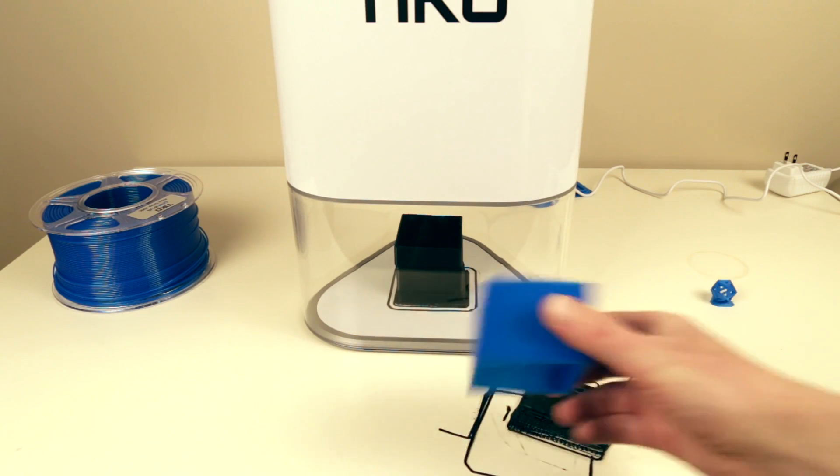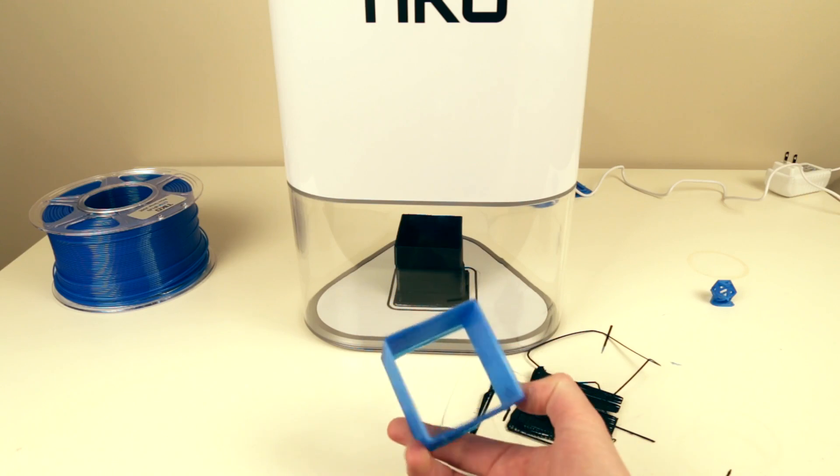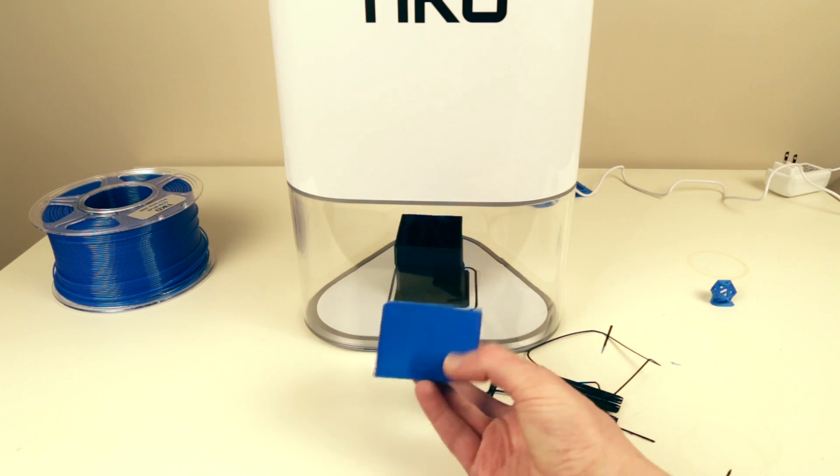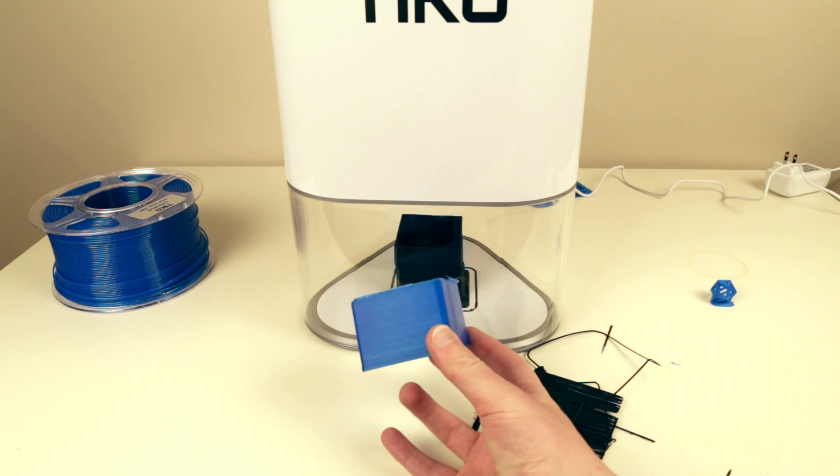So this one actually printed something that was a little box I printed. But as you notice it looks very crooked.